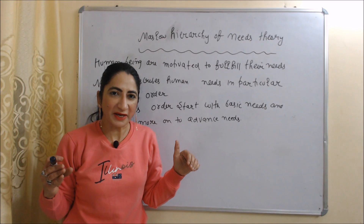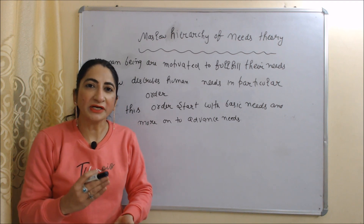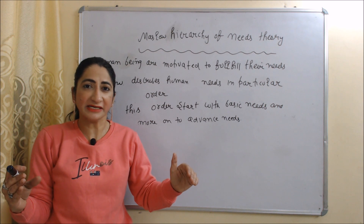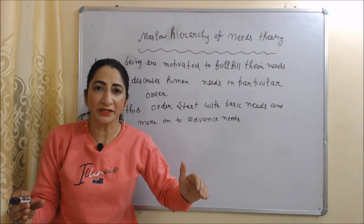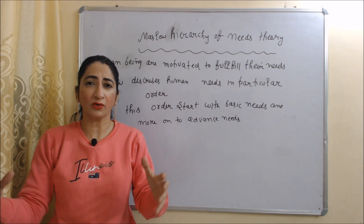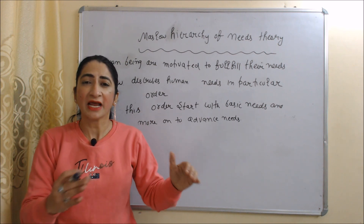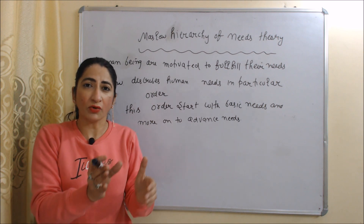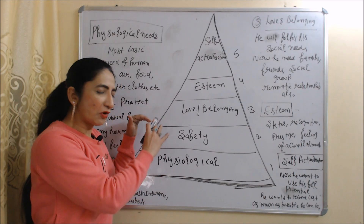Firstly, we are going to talk about Maslow's Hierarchy of Needs Theory. According to this theory, human beings are motivated to fulfill their needs. Our needs motivate us to take some action. Maslow presents needs in a particular order, starting with the most basic need and moving on to the most advanced need.